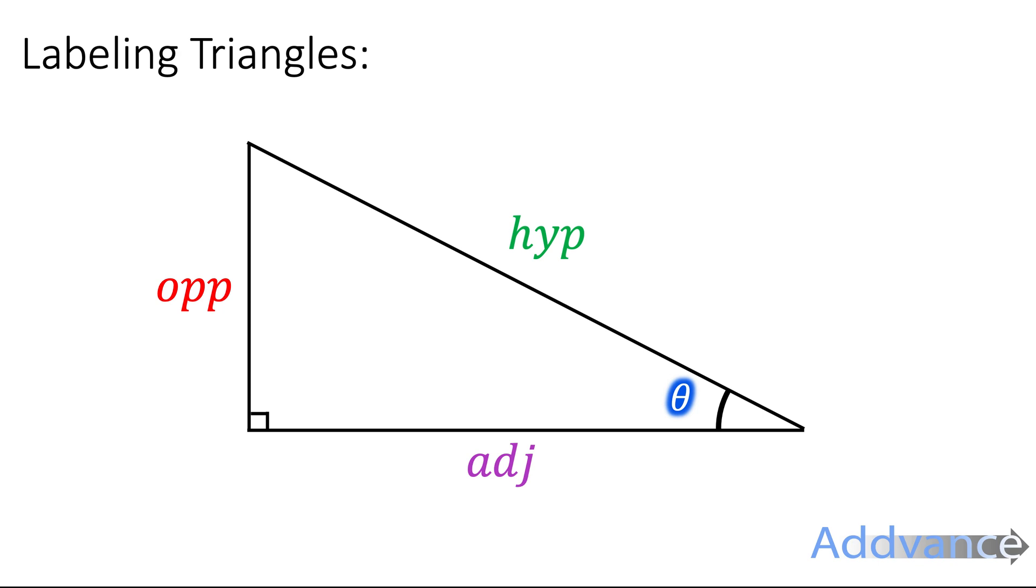In a question, you need to be able to label these in the exact correct position. So you should practice being able to label these properly, and just remember the opposite is opposite the angle, the adjacent is next to the right angle and next to the angle, and the hyp is the longest side, it's opposite the right angle.